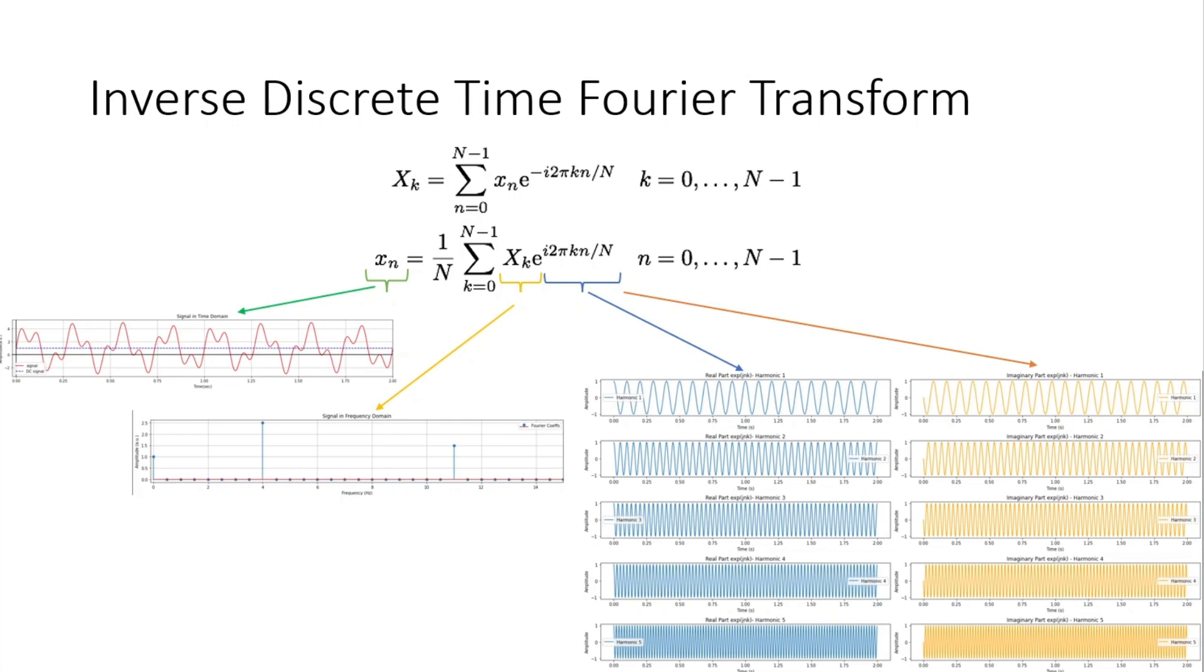Once we have understood the concept of discrete time Fourier transform, the concept of inverse is very simple. If you see the first equation here, this is the equation of discrete time Fourier transform and all we have to do is move this exponential to the other side. When this exponential gets divided, it becomes a denominator and when we take it on top, this sign will become positive. This is exactly what has happened and this equation is for inverse DTFT.